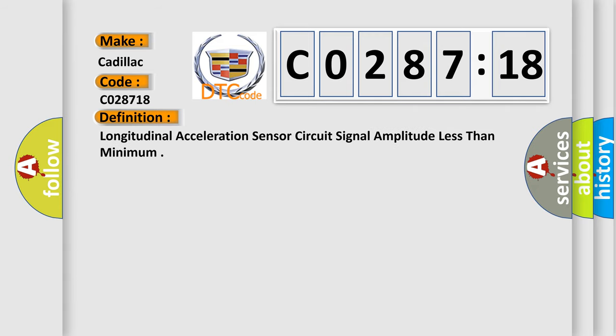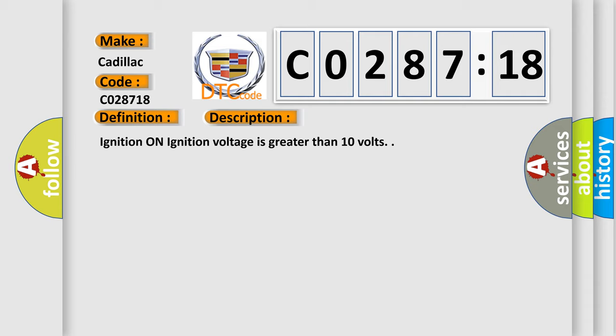The basic definition is longitudinal acceleration sensor circuit signal amplitude less than minimum. And now this is a short description of this DTC code. Ignition on, ignition voltage is greater than 10 volts.